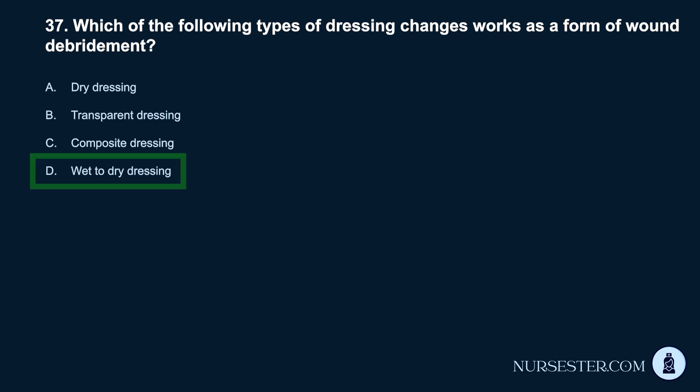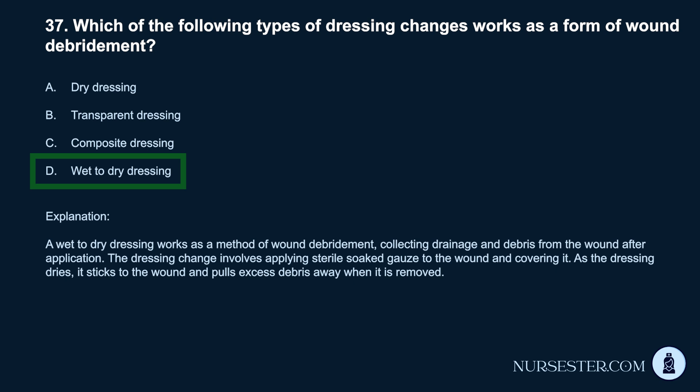Correct answer: D. Wet-to-dry dressing. A wet-to-dry dressing works as a method of wound debridement, collecting drainage and debris from the wound after application. The dressing change involves applying sterile soaked gauze to the wound and covering it. As the dressing dries, it sticks to the wound and pulls excess debris away when it is removed.